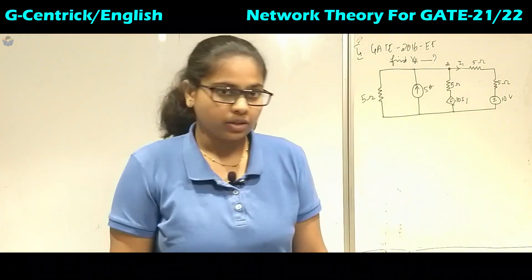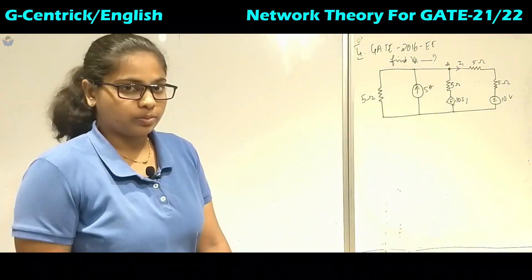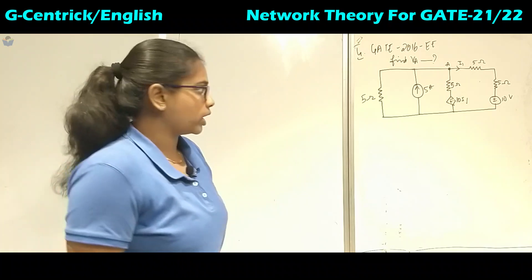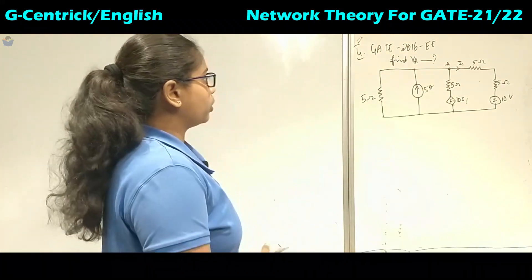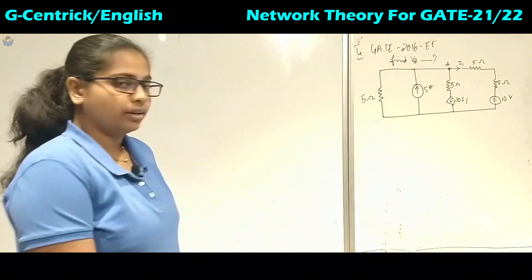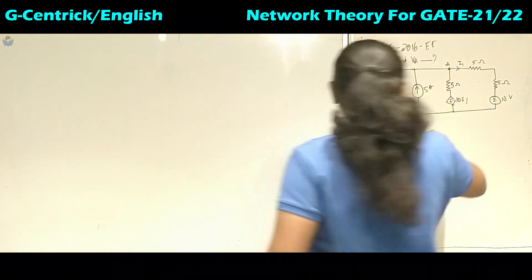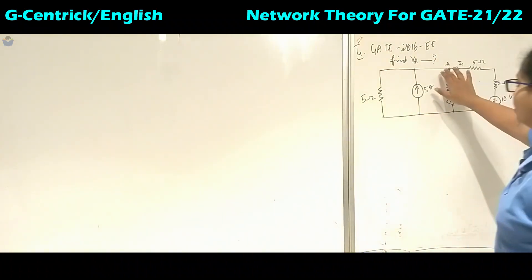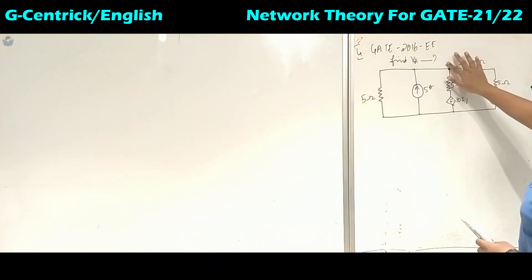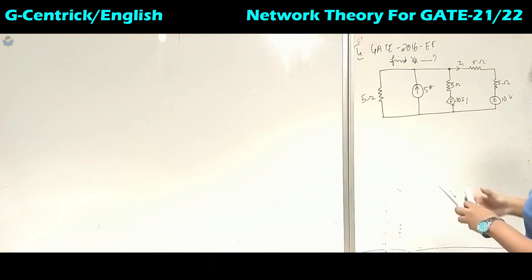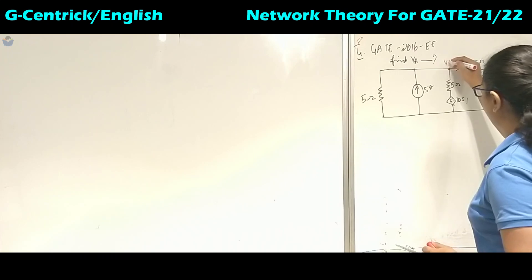Hello friends, welcome back. We will continue with the next problems based on nodal analysis. In the fourth problem, we have to find VA. The point given is here A, and we will replace it with VA because it's already an identified node.